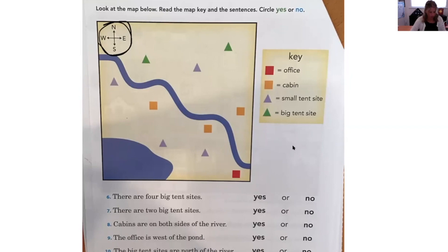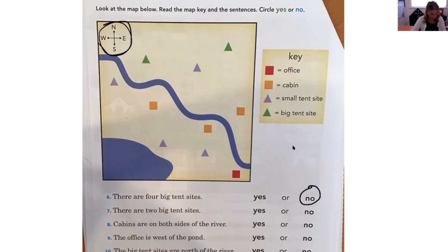Number six: there are four big tent sites. Which color is the big tent site? Green. Are there four of them on the map? Not counting the ones from the key — are there four? No, there are not. So we're going to circle no. Number seven: there are two big tent sites. The big tent site is what color? Green. Are there two of them? Yes, there are.